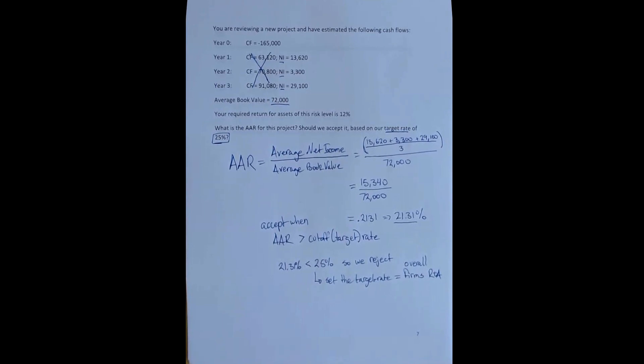And that is one of the failings of the AAR. However, it still has its uses, and it has its uses particularly when accounting information is more reliable than the projections about operating cash flow. And that can be for any number of reasons.